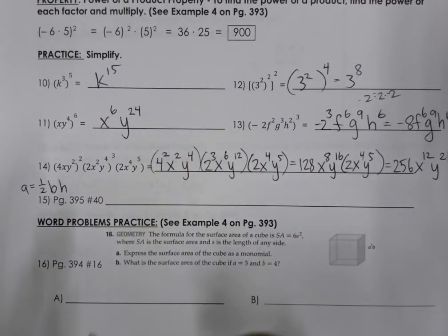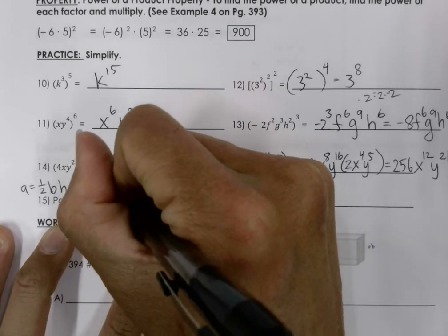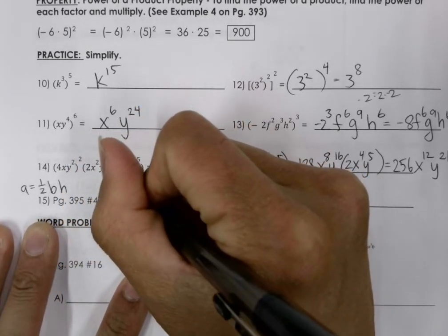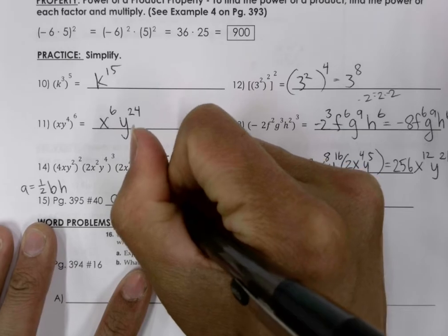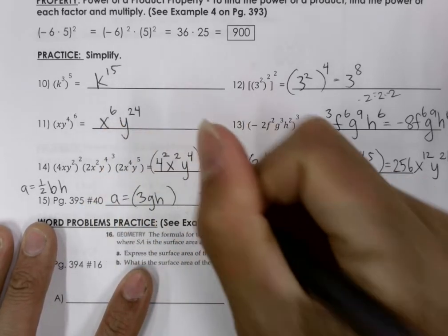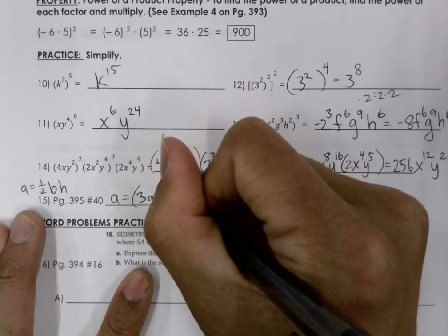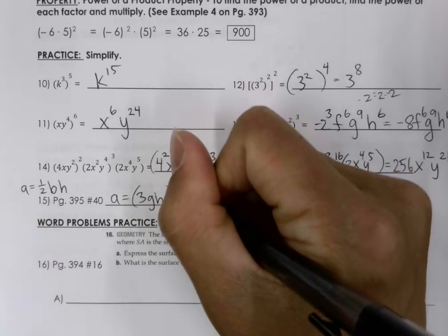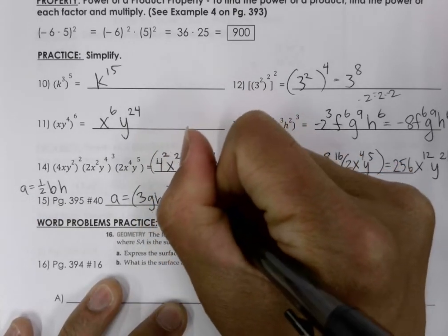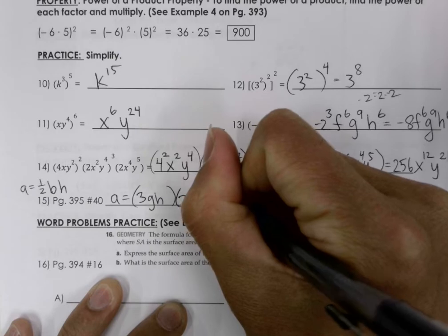So we know what the base is. So I'm going to go ahead and say area is equal to the base, which is 3gh. I'm going to put that in parentheses times the height. So the height is 2g squared h to the 5.